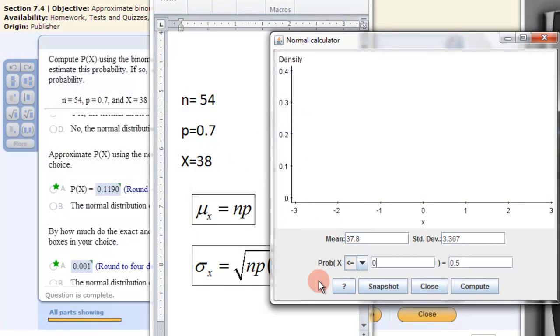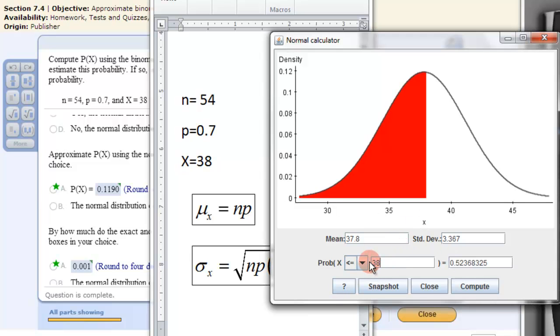3.367 is the standard deviation. Alright, then we're approximating 38. Now if we just put 38 in here, this is not going to be the correct answer. It says 0.52. Because this is taking all this information and we just want exactly 38. So we want just exactly 38. So we have to look at something here.